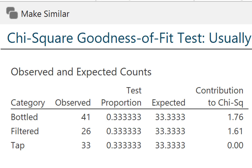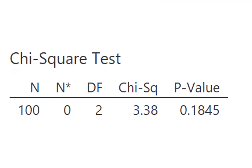The p-value is greater than the standard 0.05 alpha level, so we fail to reject the null hypothesis. There is not evidence that the proportion of people in the population who prefer bottled, filtered, and tap water are different. Next, I want to use the same dataset to conduct a chi-square test of independence using the gender and usually drink variables — two categorical variables.